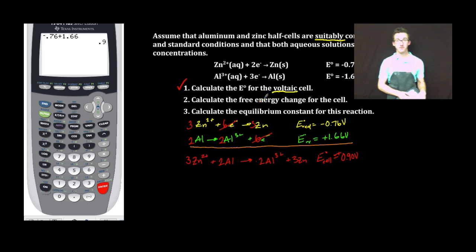Our next step is to calculate the free energy change for the cell. Remember, we can calculate the Gibbs free energy change from the cell potential by using this equation. Plug in some numbers. This is why it's so important to balance your equation for charge.